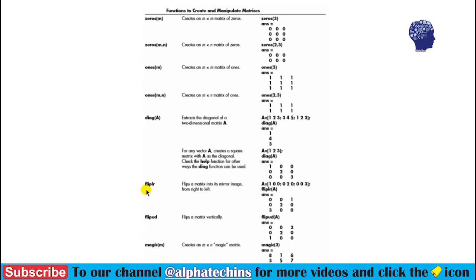The next function is fliplr, which flips a matrix like a mirror image. Here is an example where the matrix is defined and after using fliplr, it has mirrored the matrix. The next function is flipud, which flips a matrix vertically. Here is the example.